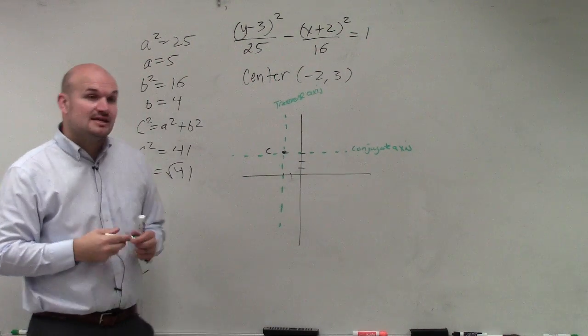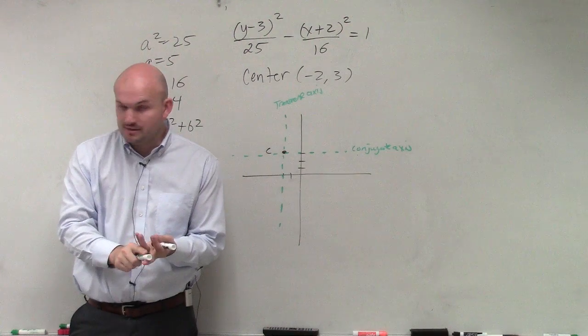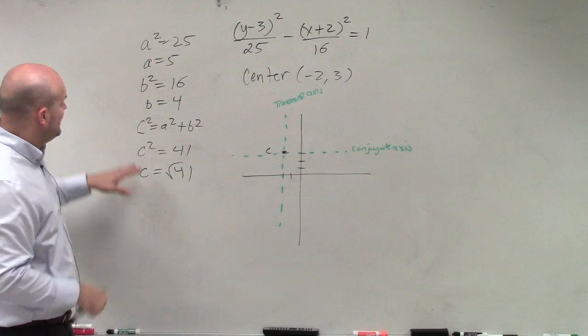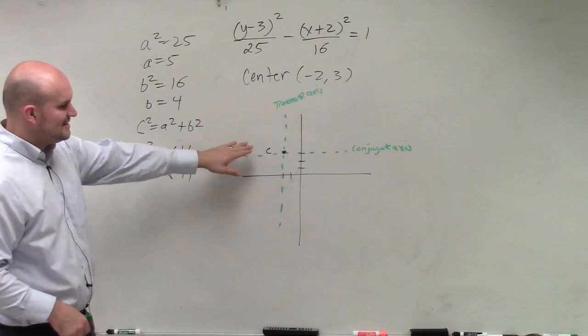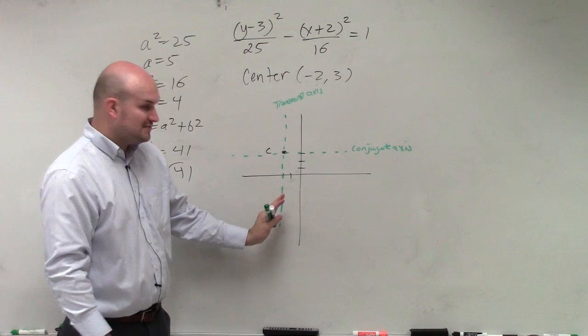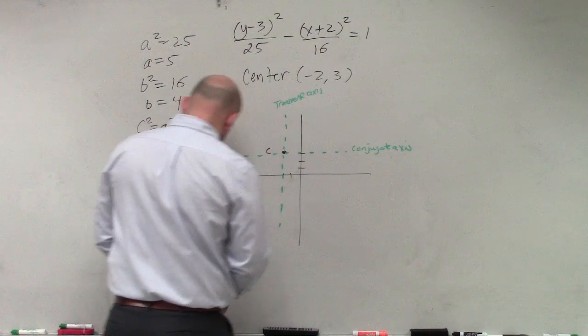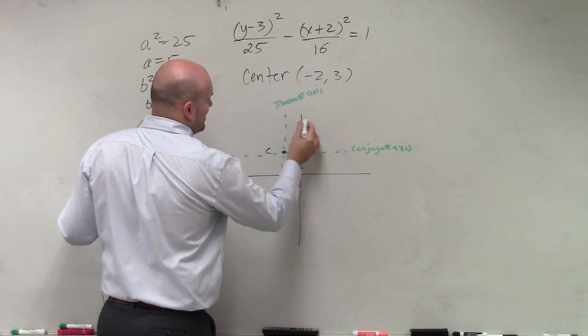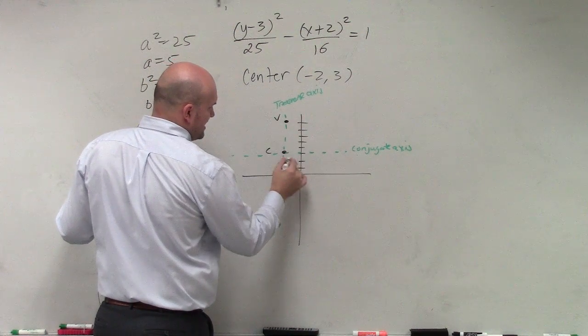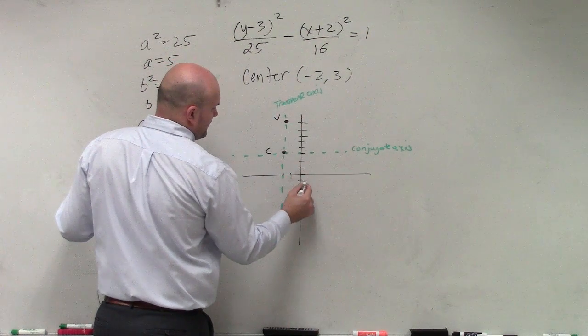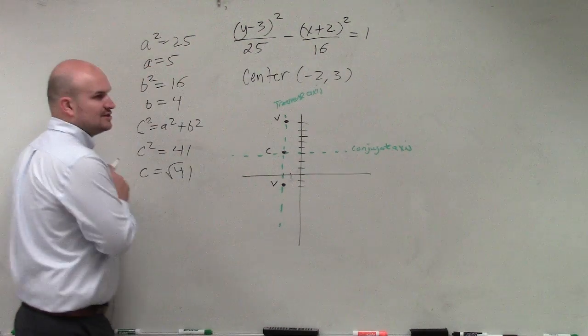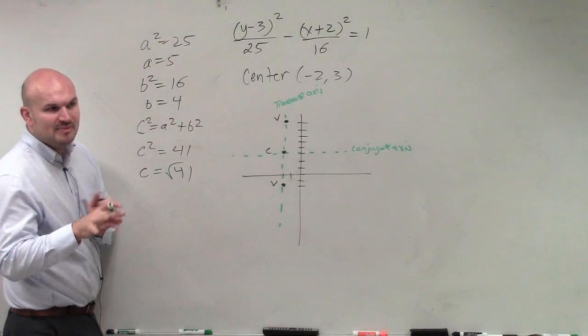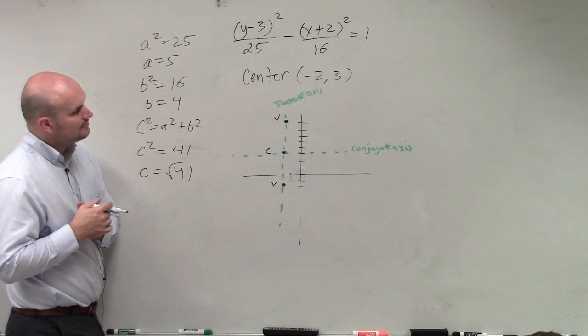What lies on the transverse axis? Your vertices and foci. What lies on the conjugate axis? Your co-vertices. Let's find our vertices. My vertices lie on the transverse axis, a distance of a away. So a is 5. I go up 5: one, two, three, four, five. And down 5: one, two, three, four, five. See how I'm doing vertices up and down this time compared to left and right? It's all based on what's under x and what's under y.